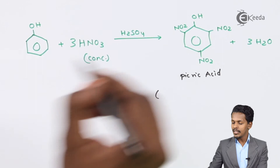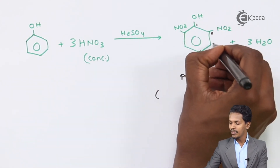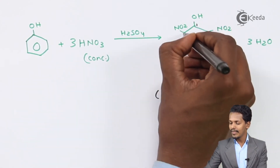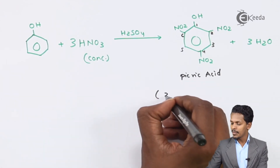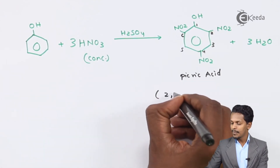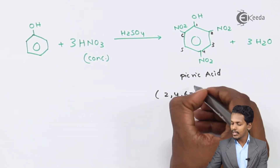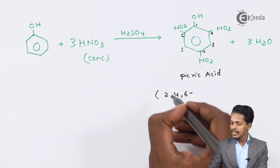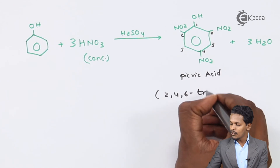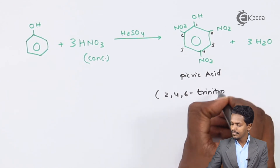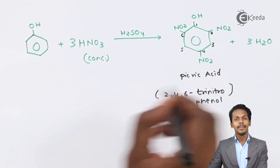Regarding the name of picric acid: numbering the carbons 1 through 6, we can observe that at positions 2, 4, and 6 there are three nitro groups attached. Therefore the IUPAC name is 2,4,6-trinitrophenol, which is nothing but picric acid.